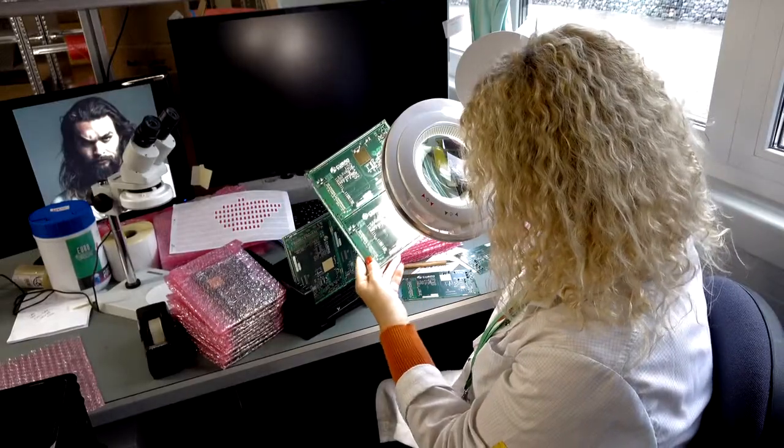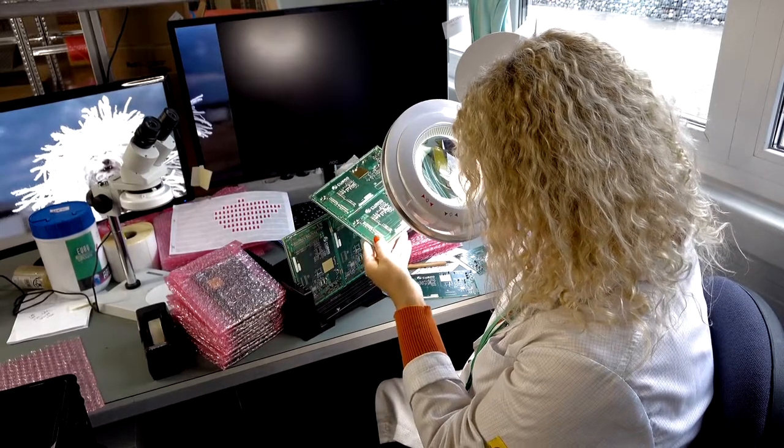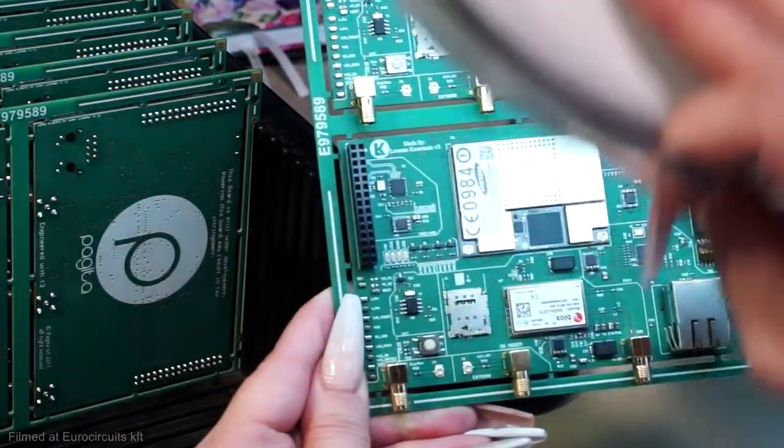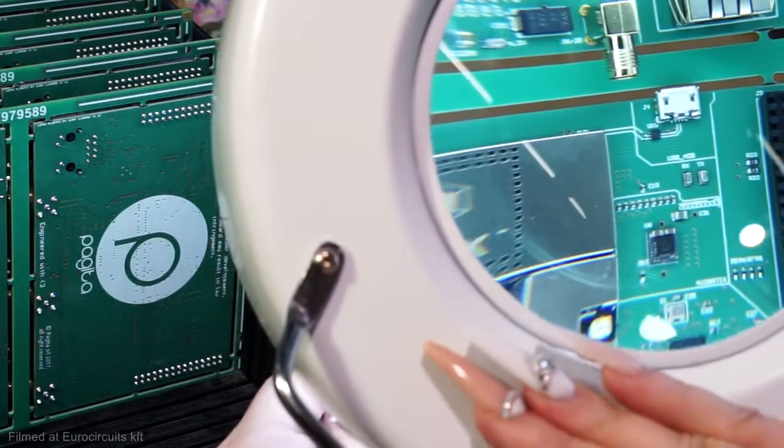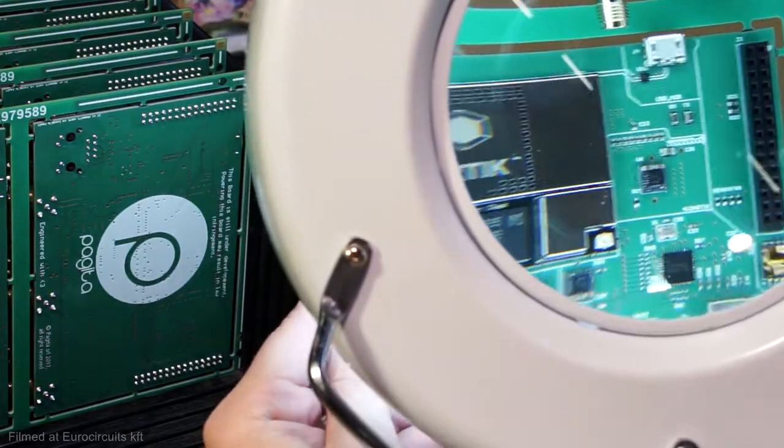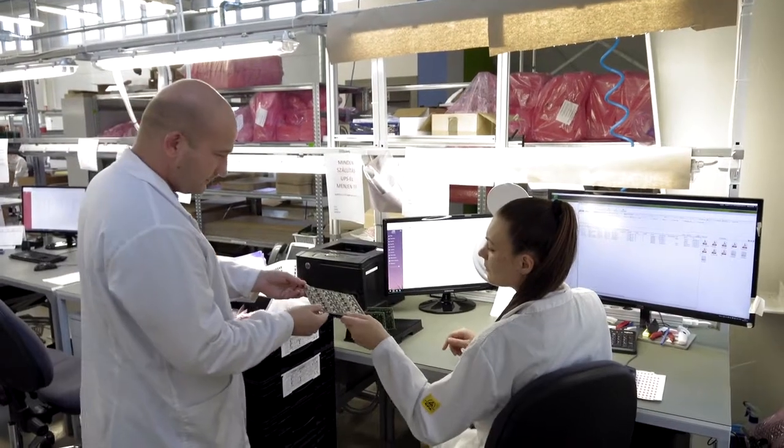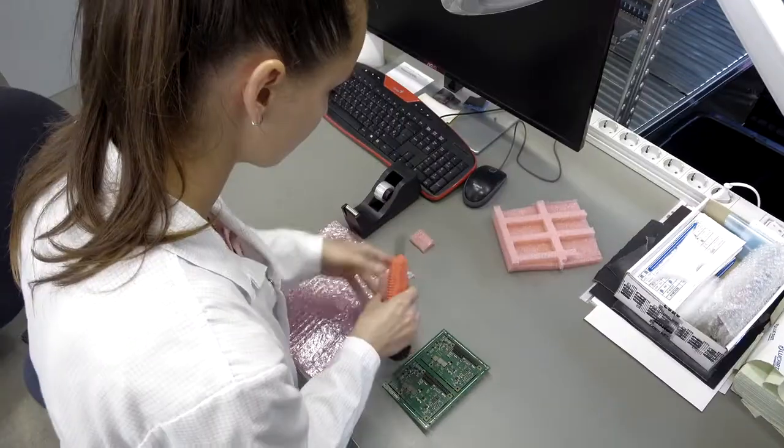Visual inspection is performed on the assembled boards according to the IPC-A-610 standard class 2, which means the acceptance of soldering and placement is based on the requirements of this standard. We do not perform any electrical testing of the assembled units.